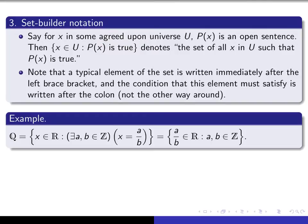For example, we can use set builder notation to indicate the set of rational numbers. When you see the brace brackets and the colon, you read this as: the set of all real numbers x such that there exist integers a and b such that x equals a over b. Another way of indicating the same set is to write a/b as the typical element immediately after the brace bracket — the set of all things of the form a/b in the real numbers such that a and b are integers.